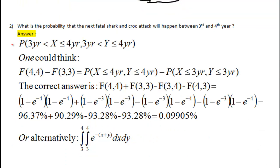We are now ready to tackle the next question. What is the probability that the next fatal shark and croc attack will happen between year 3 and 4? Well, it's the same as probability that our x variable is between year 4 and year 3, and our y variable is between year 4 and year 3.